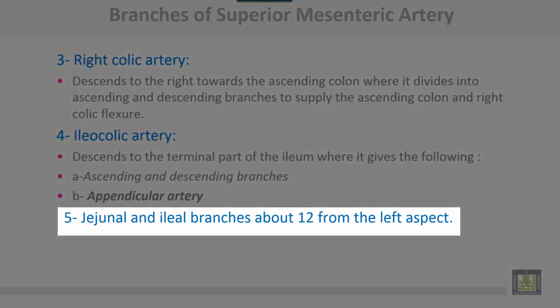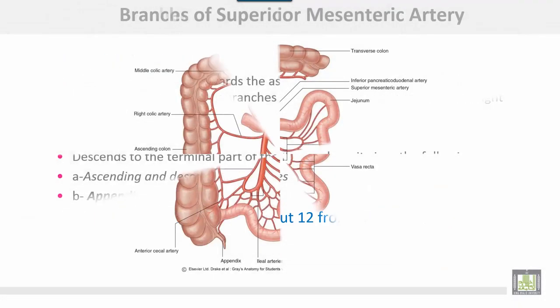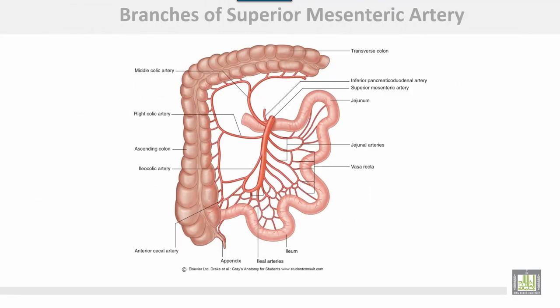From the left aspect of the superior mesenteric artery arise the jejunal and ileal branches, about 12 branches. The branches shown include the middle colic, right colic, and ileocolic from the right aspect.